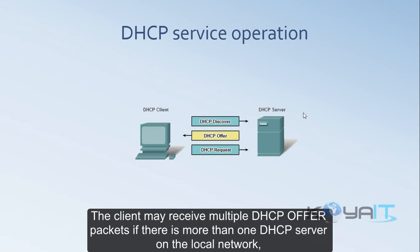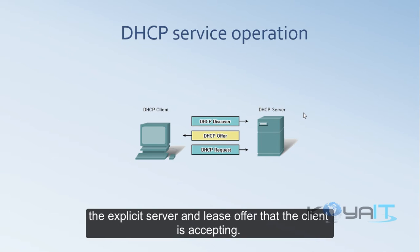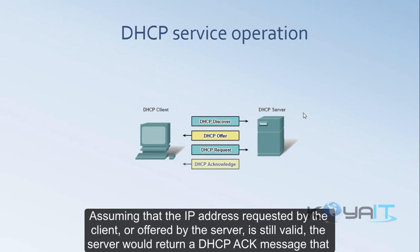The client may receive multiple DHCP Offer packets if there is more than one DHCP server on the local network, so it must choose between them and broadcast a DHCP Request packet that identifies the explicit server and lease offer that the client is accepting. Assuming the IP address offered by the server is still valid, the server returns a DHCP ACK message acknowledging the client that the lease is finalized.